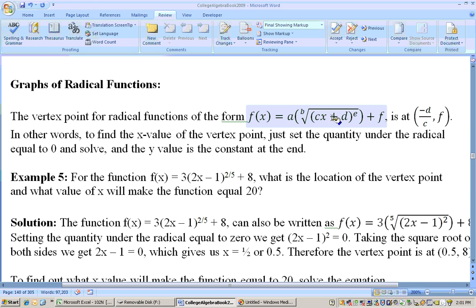Well, you can, if you set it equal to zero, you can get rid of the root, the b root, by raising both sides to the b power, and you can get rid of the e power by raising it to the e-th root. Either way, you end up being able to eliminate these. Then, all we have to do is take the d to the other side, if you think of cx plus d equal to zero, take the d to the other side, so you get minus d divided by c. So that's the x part of the vertex point, and the constant at the end is the y part of the vertex point.